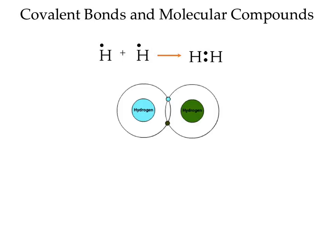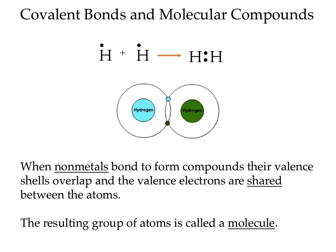Here's another way to draw that. This is always about non-metals bonding to form compounds. Their valence shells are going to overlap, and these valence electrons are going to be shared between these atoms. We call this a molecule — it's a group that is sharing electrons, and they are being bonded together this way.